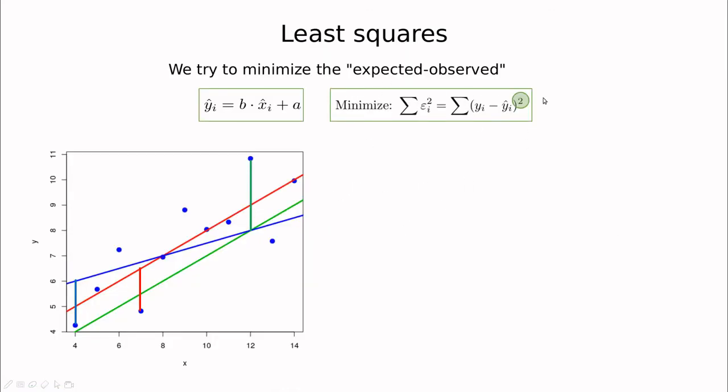So why it is called least squares? And remember, the square has to do with this. Least squares is the one which is minimizing the distance. So the distance is something that has the same sign if you are above or below. And the red line is the one that overall is reducing these sticks from the observations to the line.